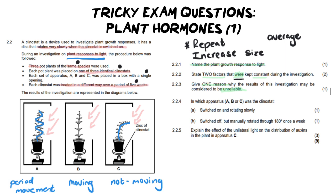Another answer is: did they increase the sample size? They only used one plant per setup — they didn't use, say, ten plants in group A and ten in group B. So insufficient sample size is a valid answer. However, the average answer is not applicable here because we cannot calculate average growth in this particular example. Avoid just regurgitating standard answers — they must be applicable to the specific question you're currently busy with.